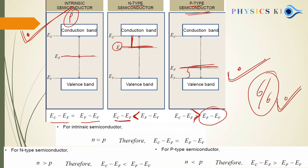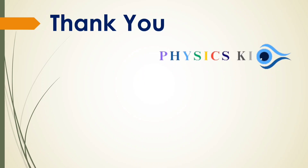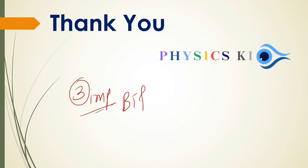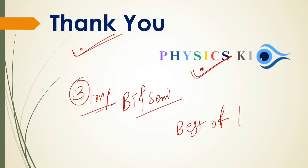So only these 3 questions are important from the band theory and semiconductor material chapter. In intrinsic: EF is at center (EC − EF = EF − EV). For N-type: n > p, so EF is near conduction band. For P-type: p > n, so EF is near valence band. Thank you very much for your support to Physics Ki Trishti. Best of luck to all of you.